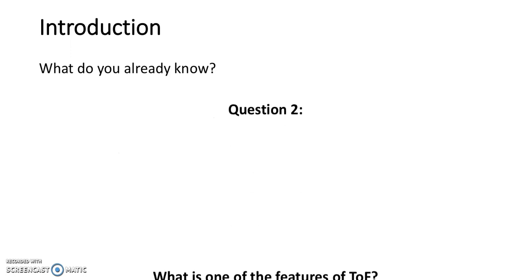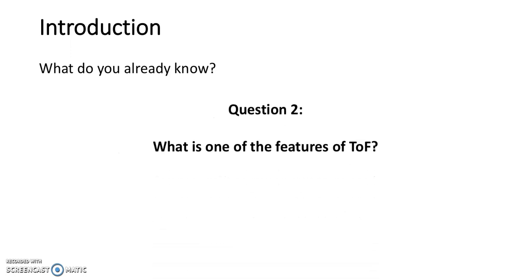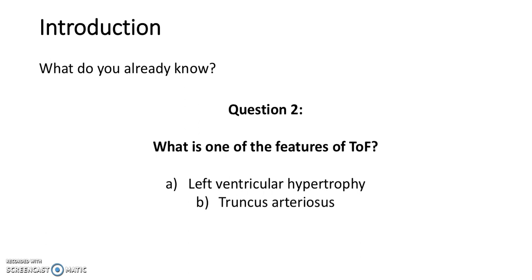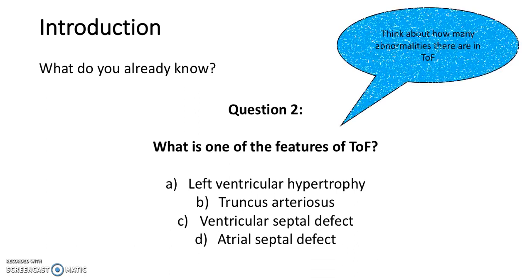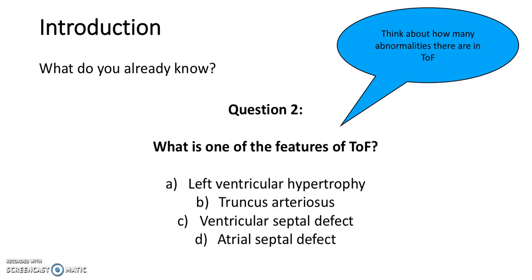Question 2: What is one of the features of tetralogy of Fallot? A, left ventricular hypertrophy; B, truncus arteriosus; C, ventricular septal defect; or D, atrial septal defect? Think about how many abnormalities there are in tetralogy of Fallot. The answer is ventricular septal defect.